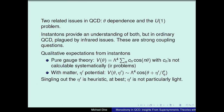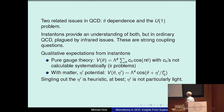This is really taking us back a long way — even before the beginnings of Nati's career. In those days, instantons were thought to provide an understanding of both theta dependence and the U1 problem. But while they looked qualitatively interesting, they were plagued by infrared questions. One couldn't do reliable computations, and the questions are really questions of strong coupling.